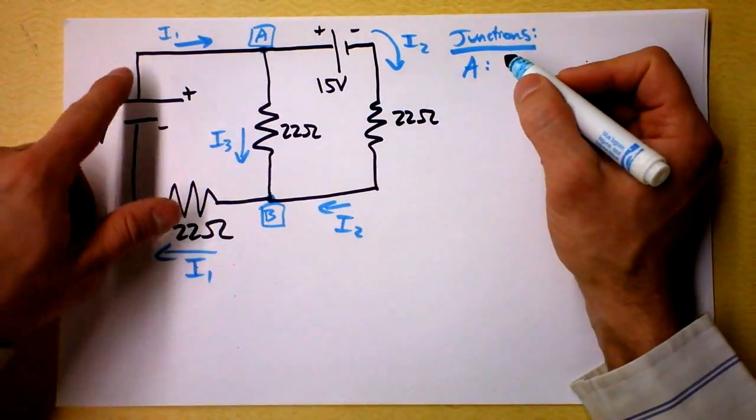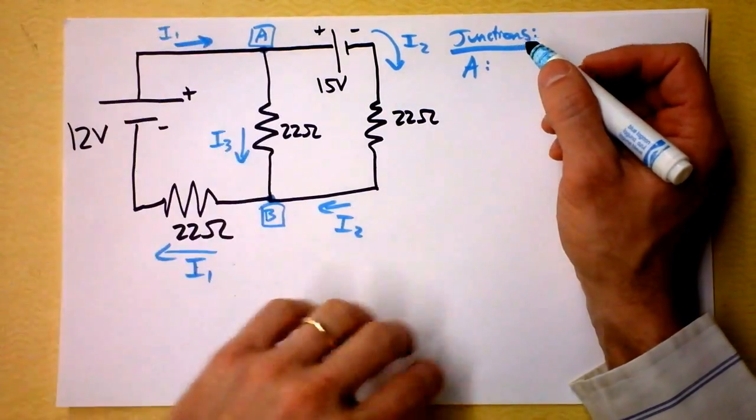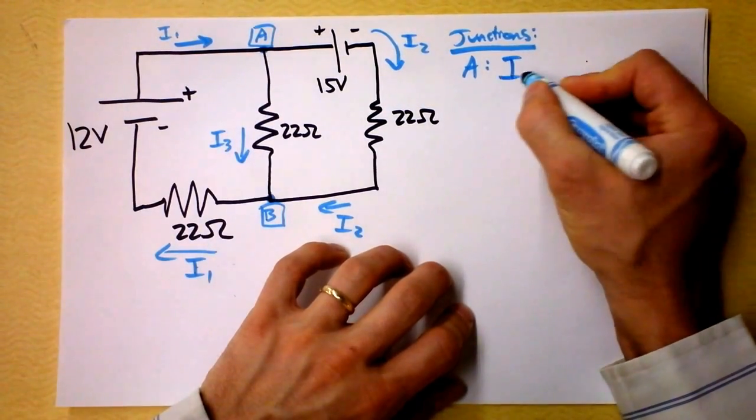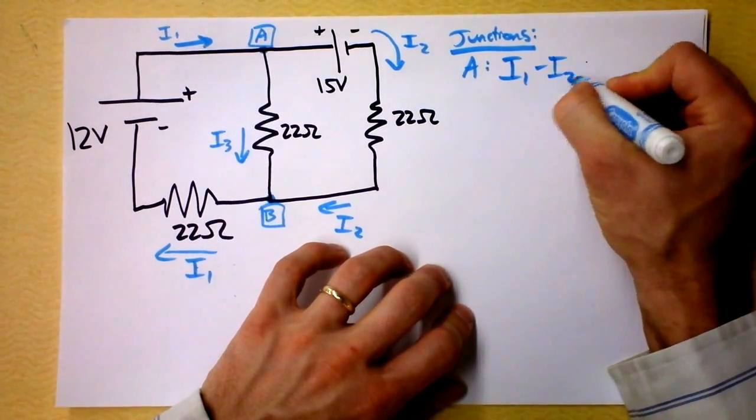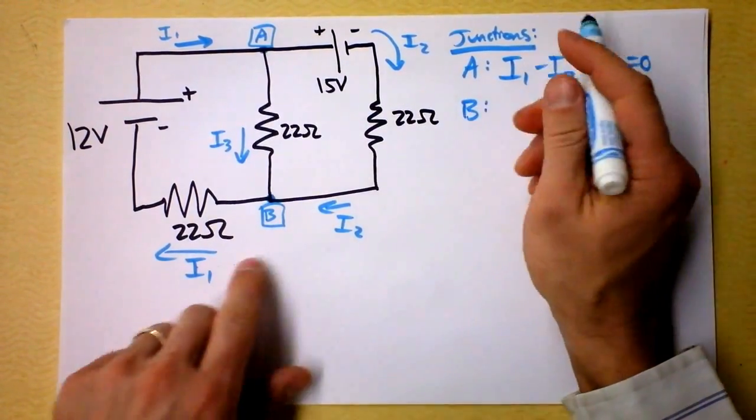So junction A has current 1 going in and current 2 and 3 going out. So I write current 1 minus current 2 minus current 3 equals 0.